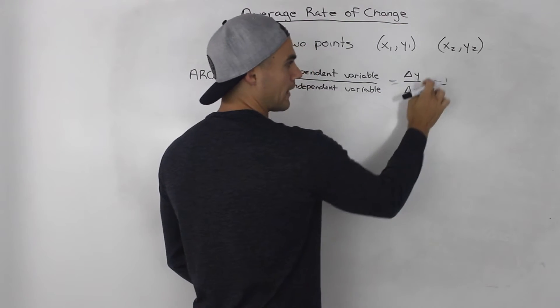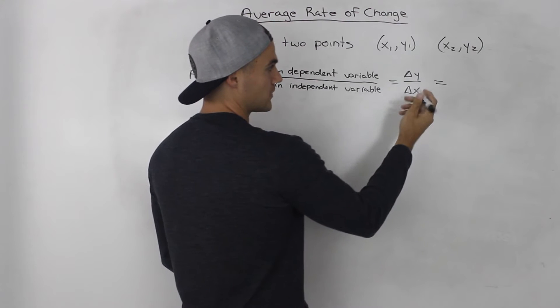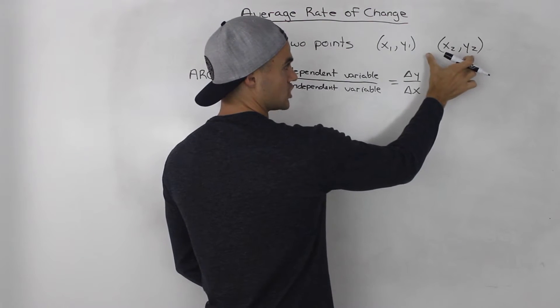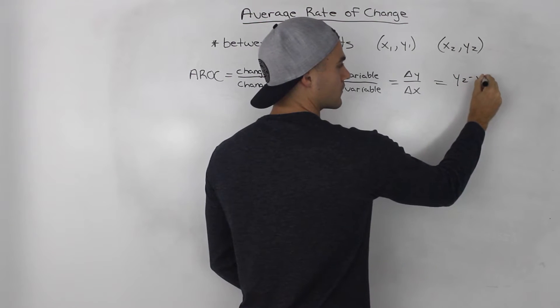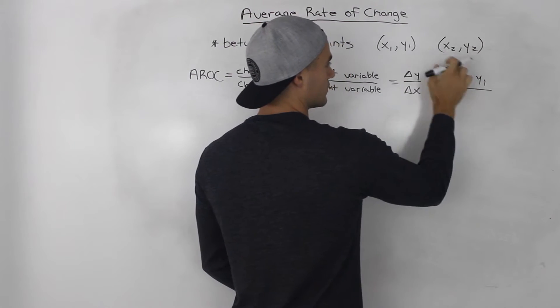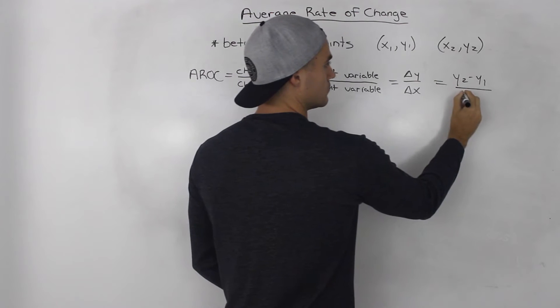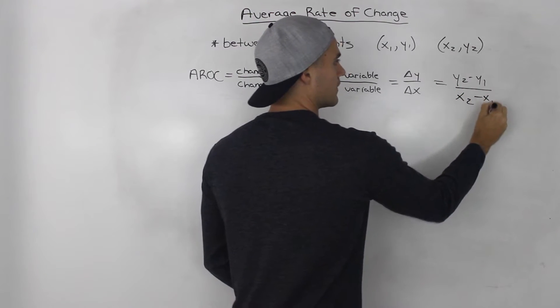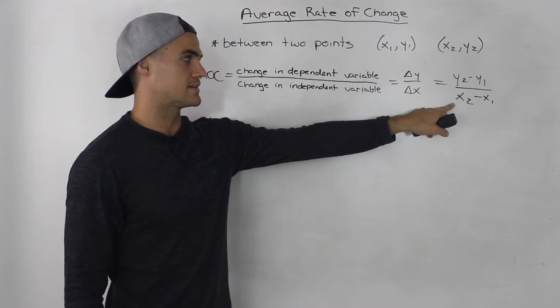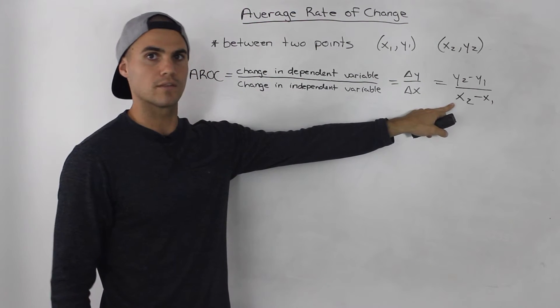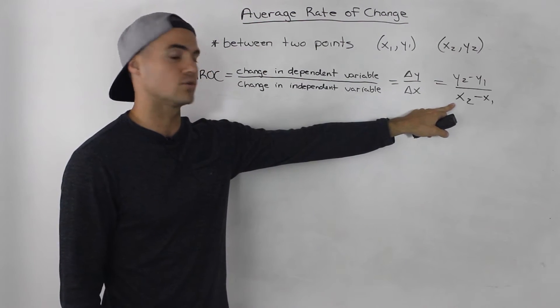So the change in y over the change in x, which we can also rewrite as y2 minus y1 over x2 minus x1. And notice how this is the same as the slope formula that we learned a few grades back.